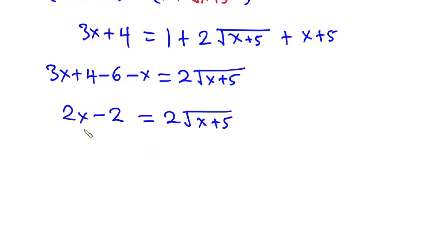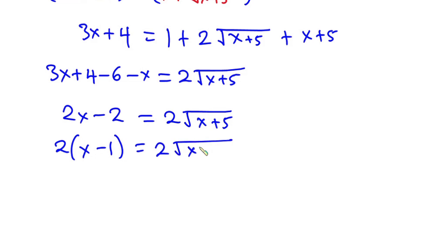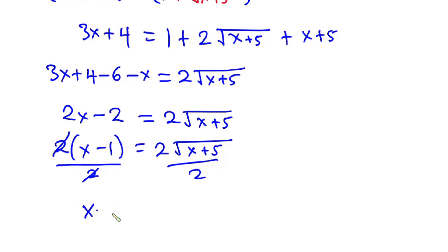We can factor 2 out of the left side: 2 times (x minus 1) equals 2 times the square root of x plus 5. Now let's divide each side by 2, so that the 2s cancel. We now have x minus 1 is equal to the square root of x plus 5.